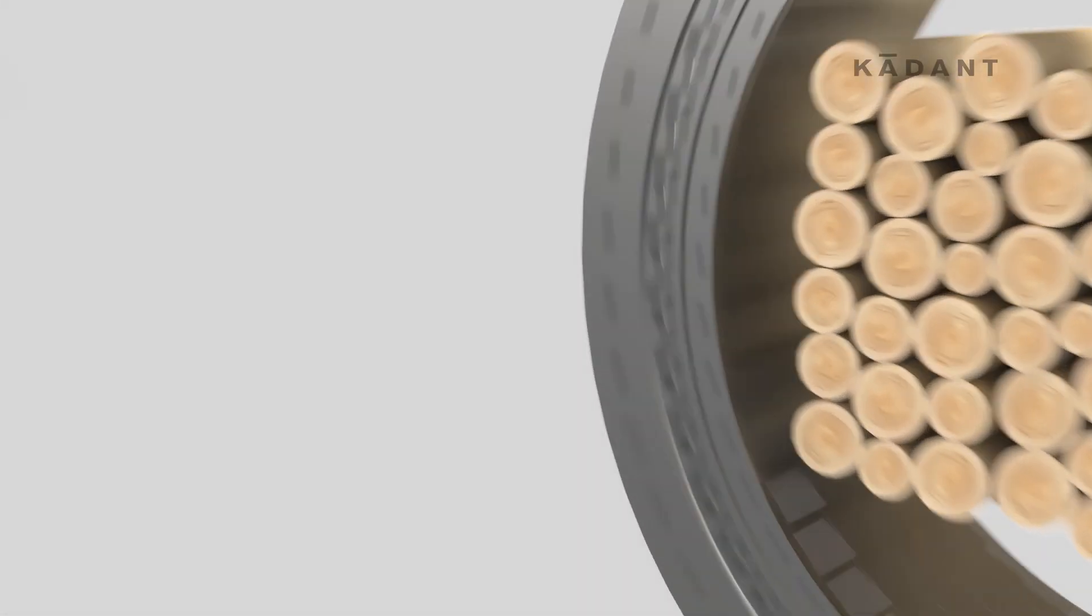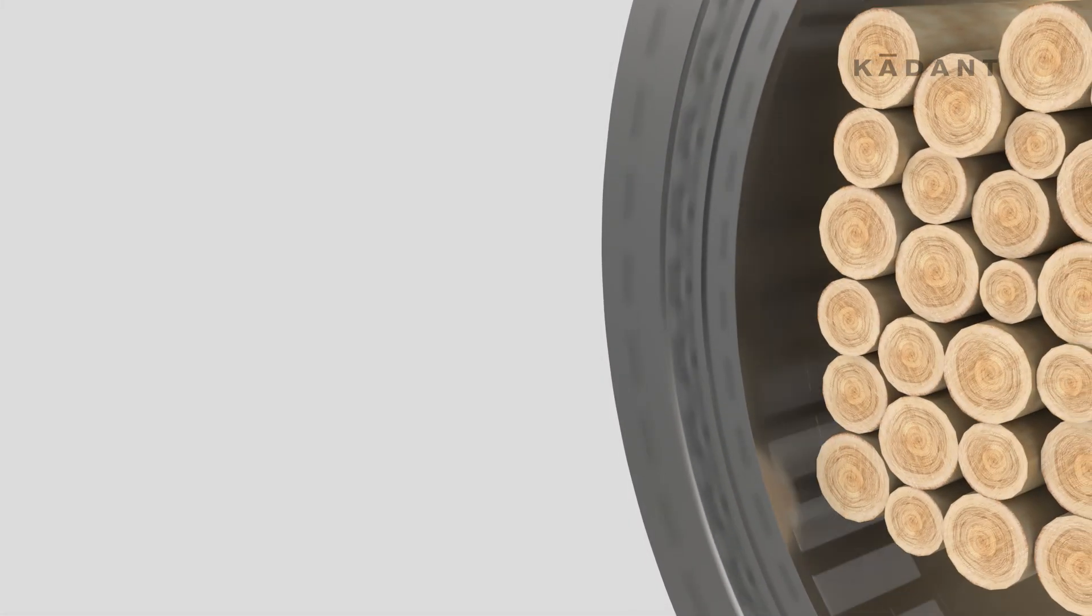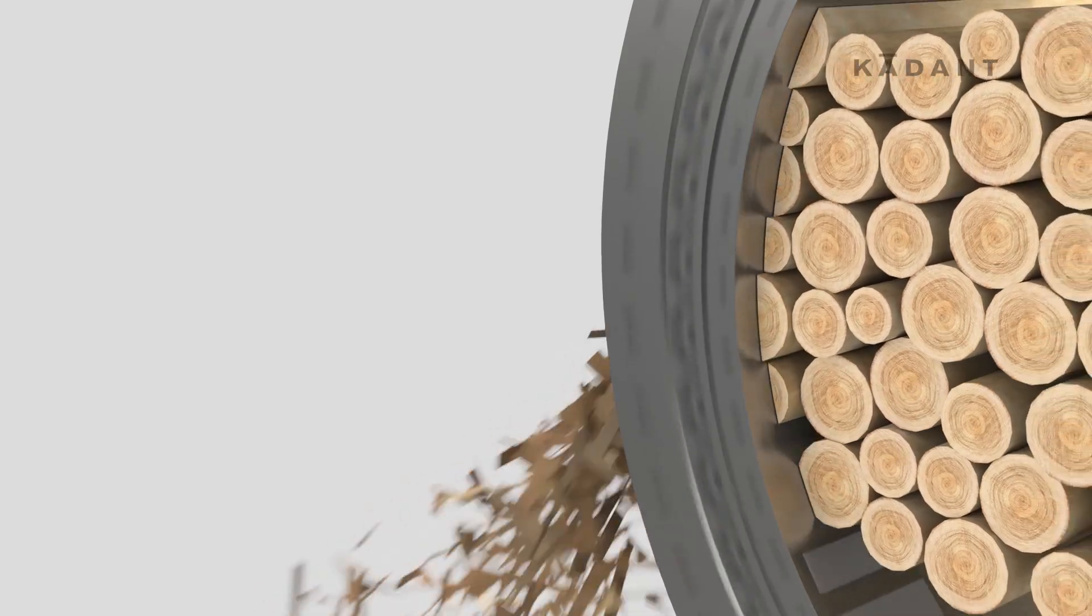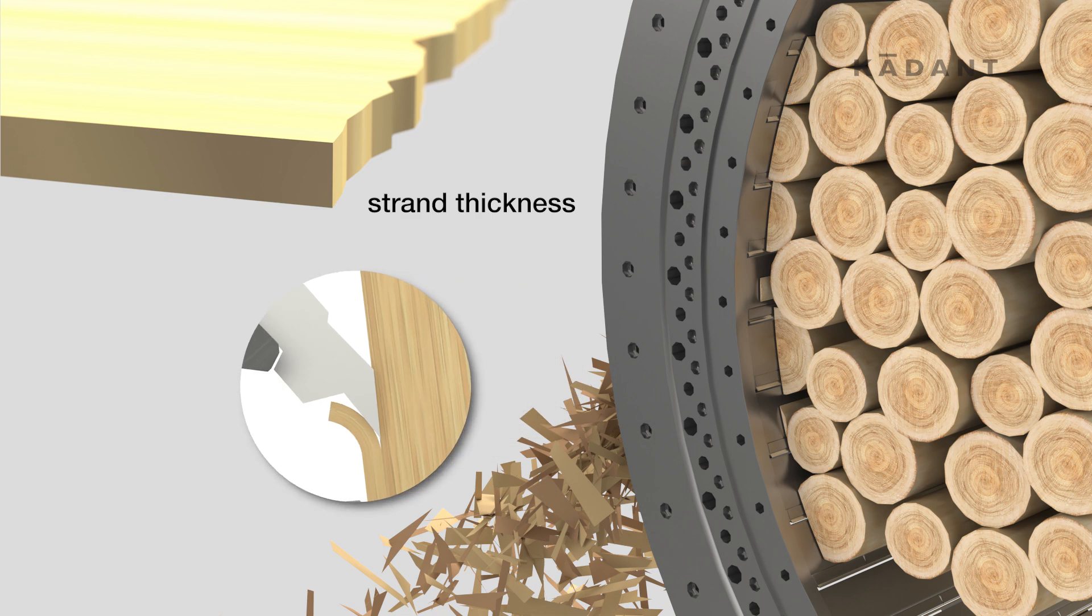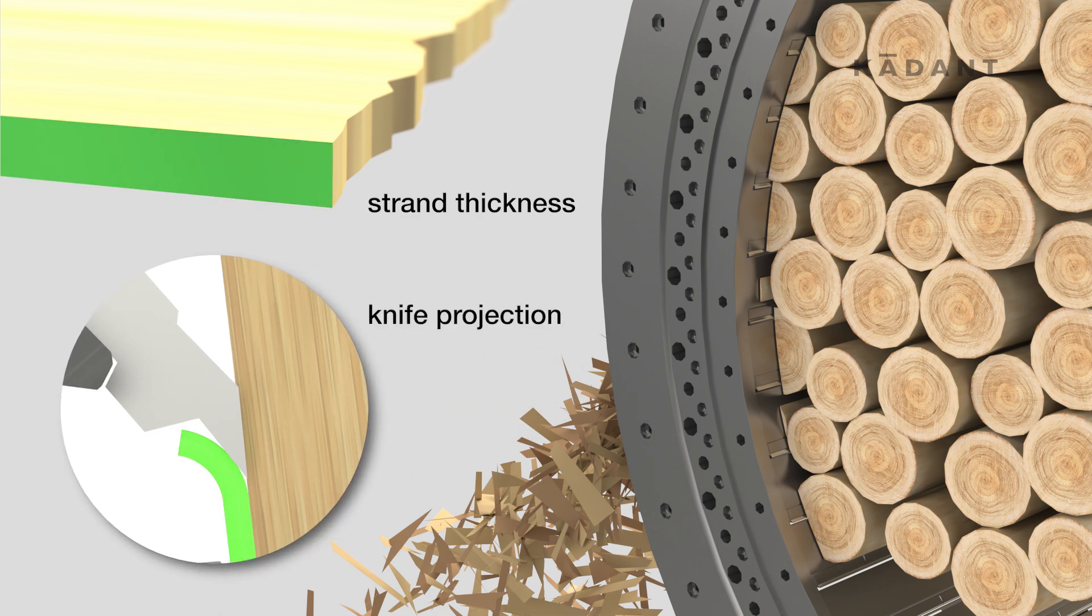Knife projection also plays an important role in determining strand geometry. Changes in strand thickness require adjustments to both the feed rate and the knife projections to attain the desired result.